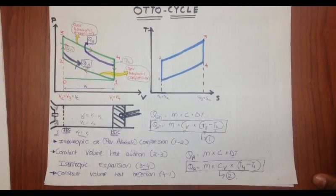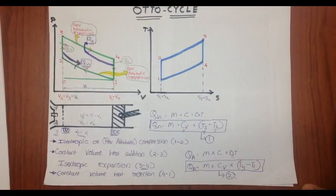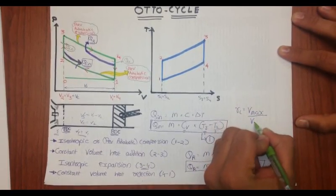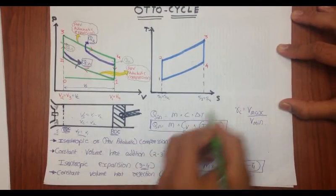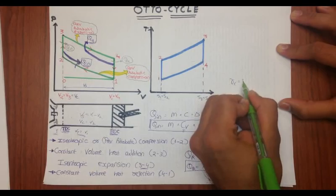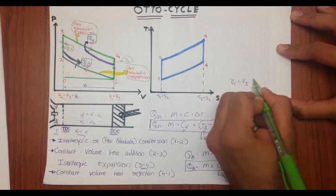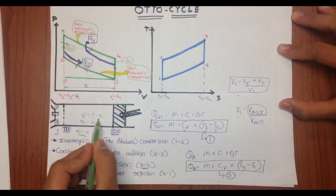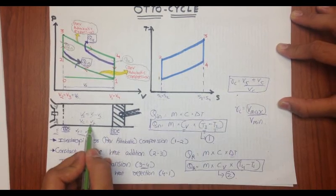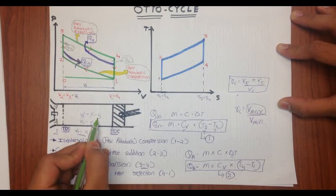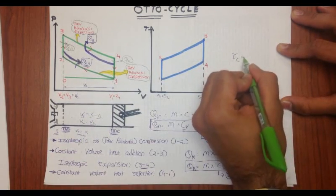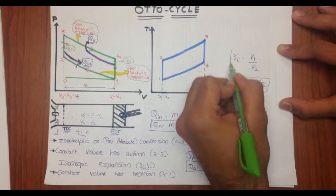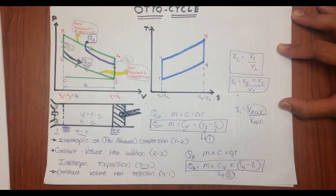The compression ratio RC = maximum volume / minimum volume = V1/V2. Since Vs = V1 − V2 and Vc = V2, we get Vs + Vc = (V1 − V2) + V2 = V1, so RC = V1/V2. This is Equation 3.